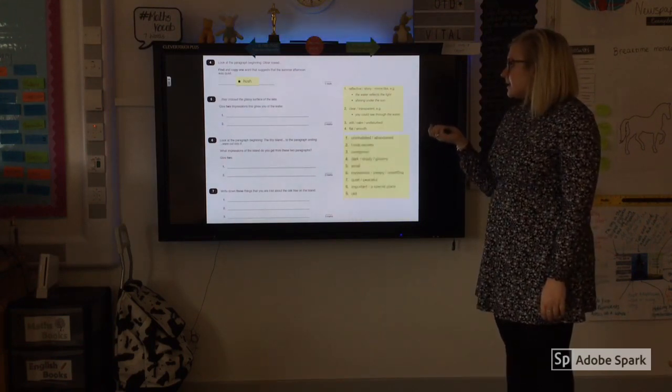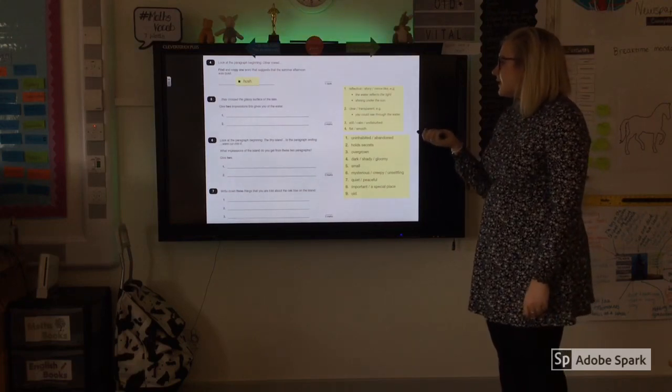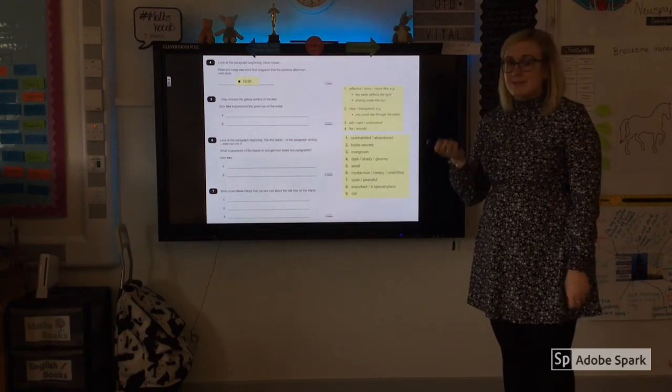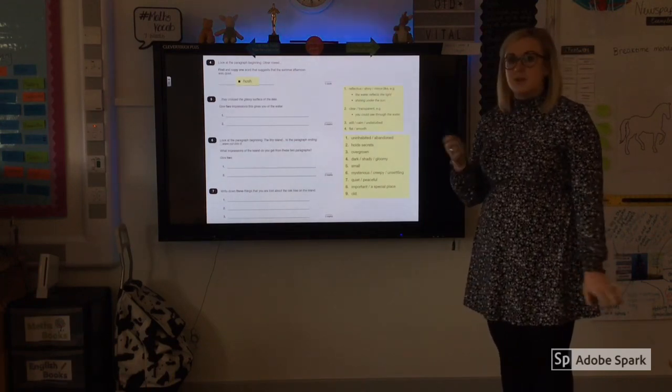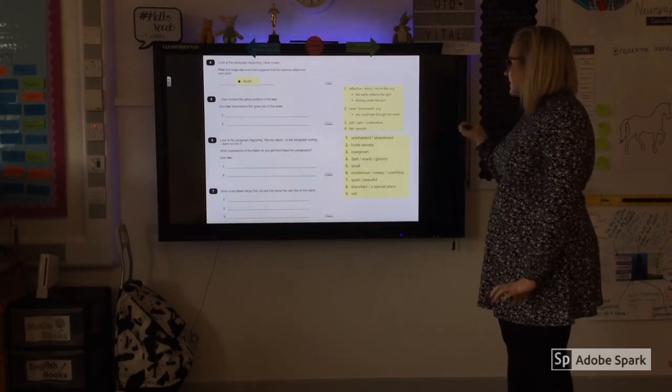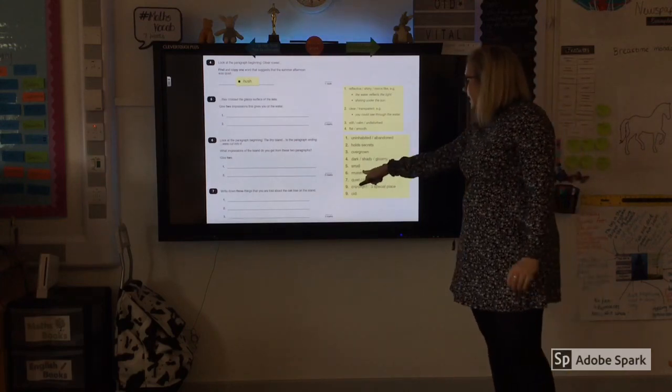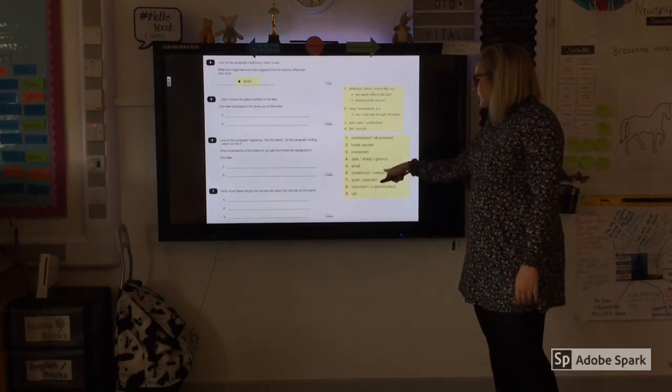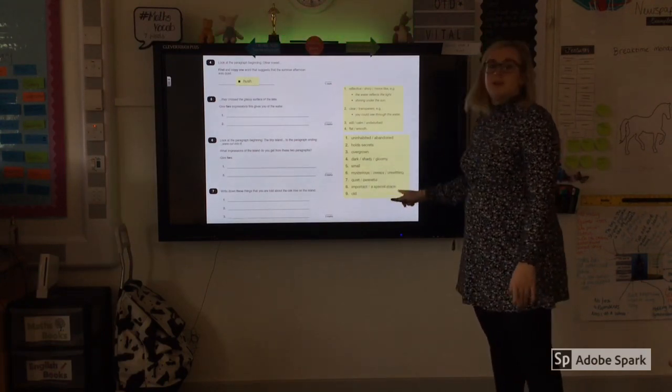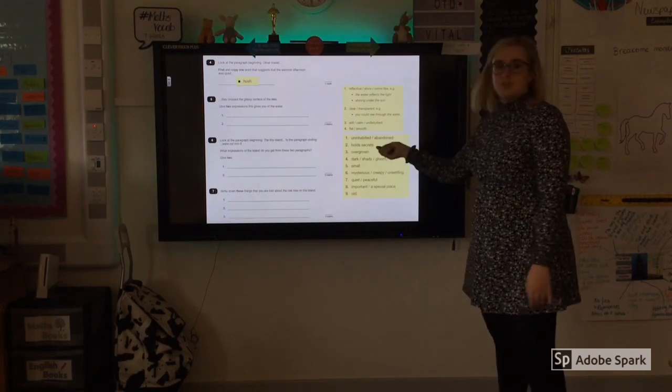Number six then. So look at the paragraph beginning, the tiny island. What impressions of the islands do you get from these two paragraphs? So you are just taking these words directly from the text. You don't need to make these up or what I would say to my year six is do not pluck them from the air. So for example, abandoned. Again, if we look at six here, there's three different meanings, unsettling, creepy, mysterious. They all mean the same. Please do not choose the three of those together because you would not get the two marks for that. You would have to choose different ones.